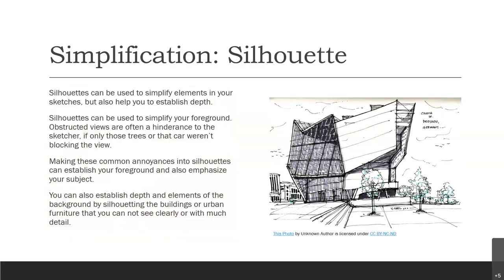Simplification. Silhouettes are a great way to simplify elements in your sketches and also help you establish depth. Silhouettes can be used to simplify your foreground or obstructed views. Obstructed views are often a frustration to the sketcher — if only those trees weren't there, or that car wasn't blocking the view. But making those common annoyances into silhouettes can establish your foreground and also emphasize your subject. You can also establish depth in the background by silhouetting buildings or urban furniture that you can't see clearly or with much detail.